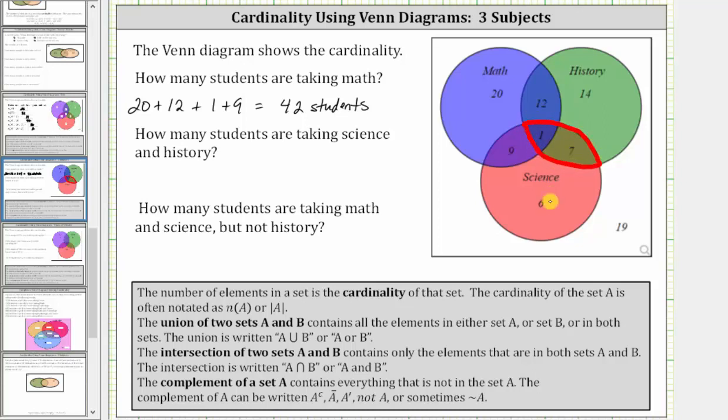The number of students taking science and history is equal to 1 plus 7, which is 8 students.